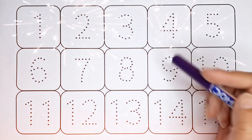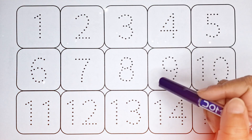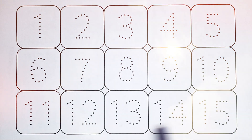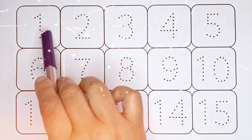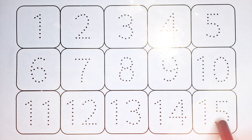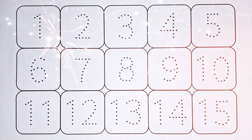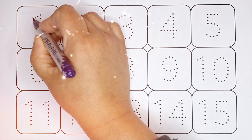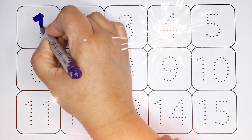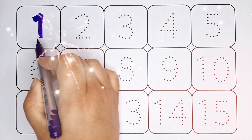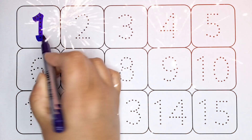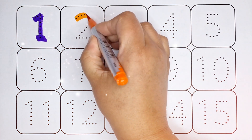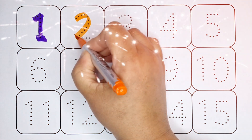Hello kids, welcome back! Let's learn numbers, counting 1 to 15. Purple color: 1, number 1. Orange color: 2, number 2.